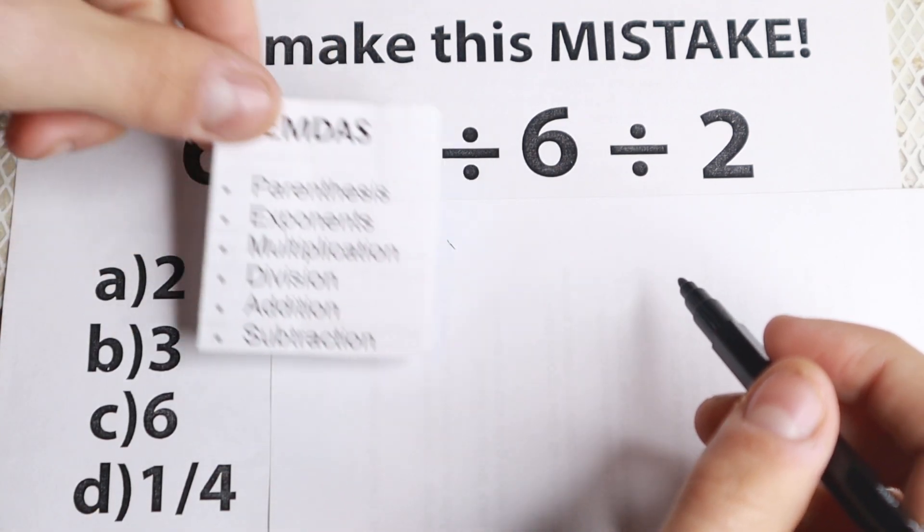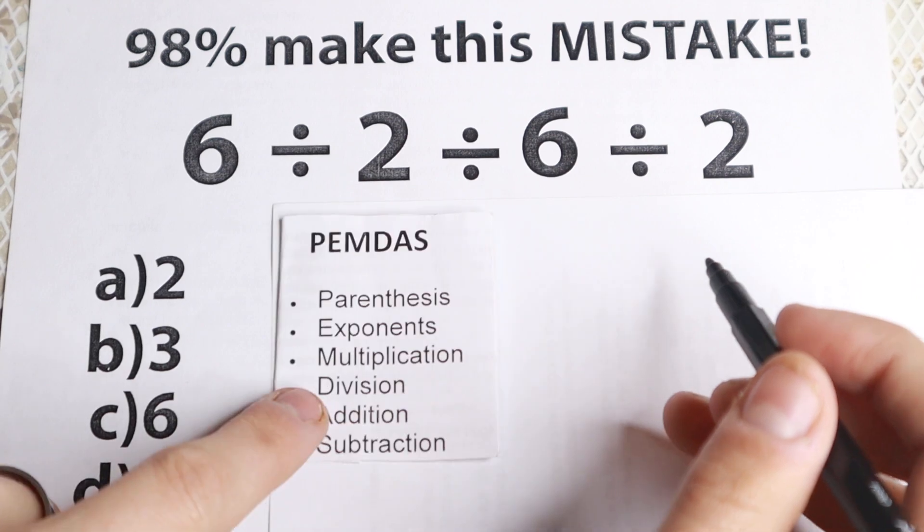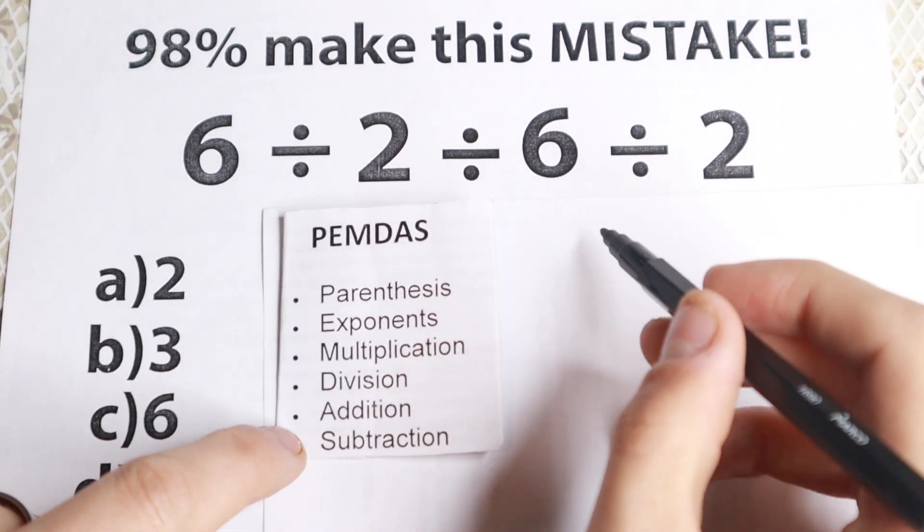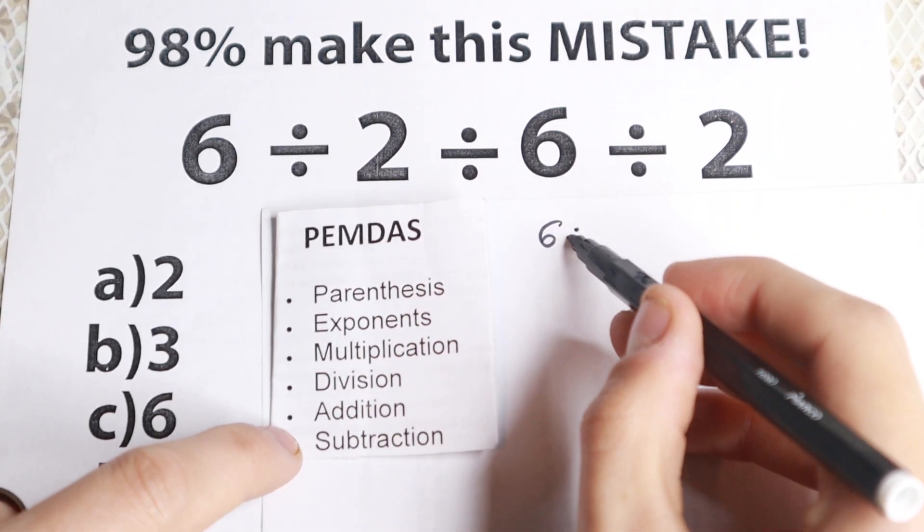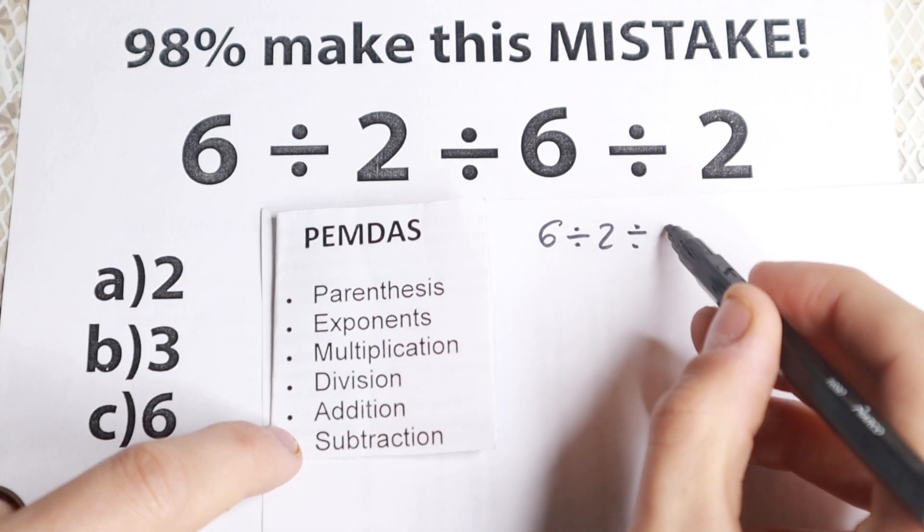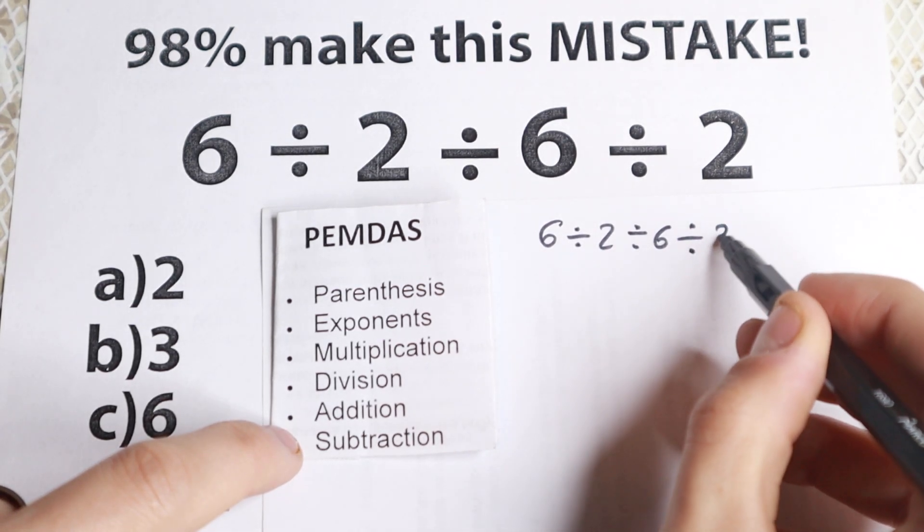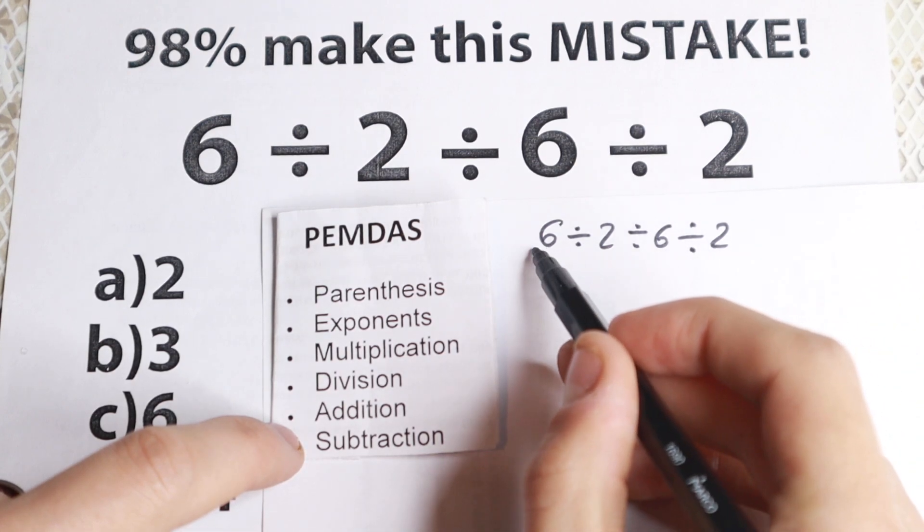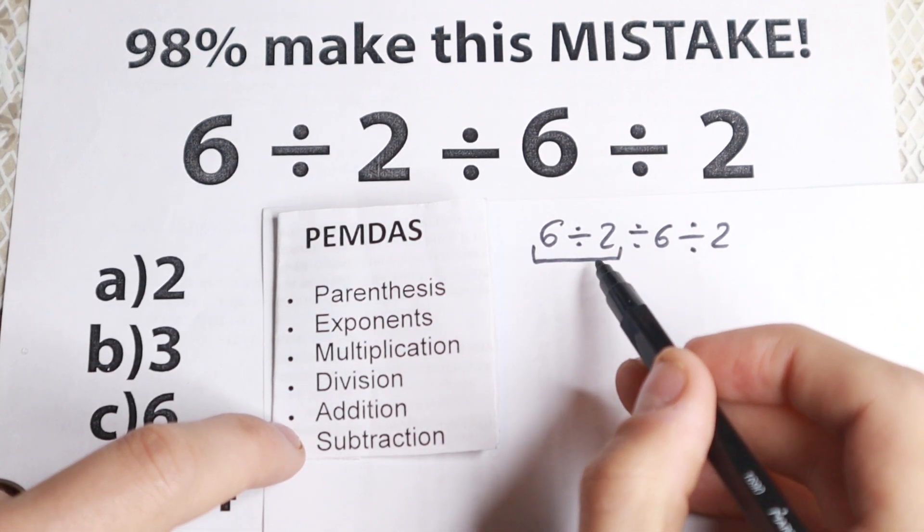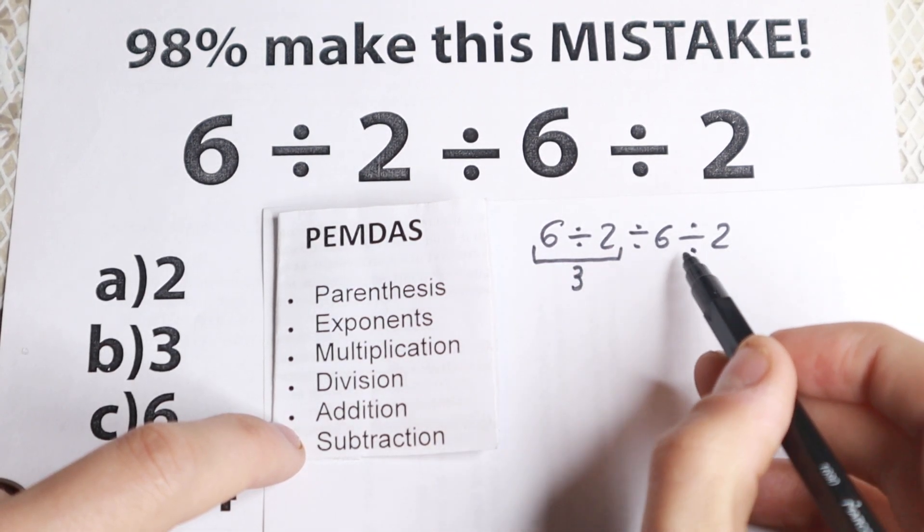Because a lot of students solve this like that. They go with this one. They go with 6 divided by 2, and divided by 6, divided by 2. A lot of students do this mistake. They divide 6 divided by 2, and okay, this is equal to 3, and they go until the end.